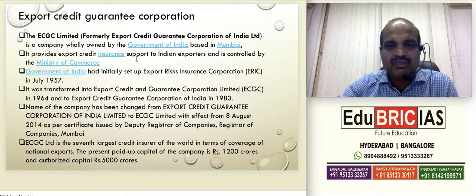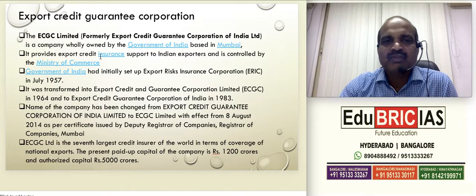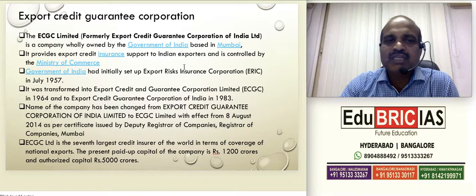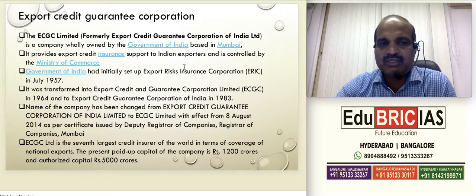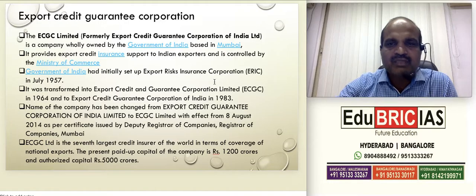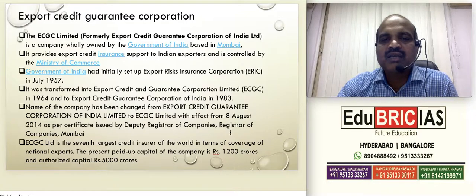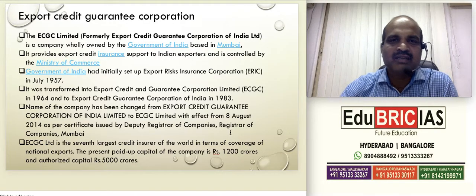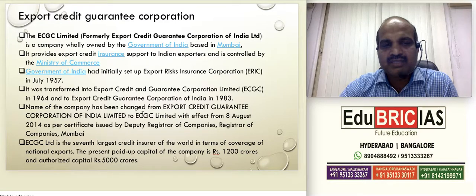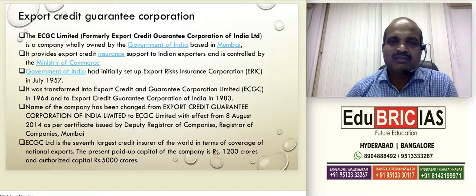Looking at the history of ECGC: ECGC Limited, earlier known as Export Credit Guarantee Corporation of India Limited, has its head office in Mumbai. It provides export credit insurance to exporters and is completely under the control of the Ministry of Commerce, Government of India. Initially it was set up as the Export Risk Insurance Corporation in 1957, then converted into Export Credit Guarantee Corporation Limited in 1964, and finally came to be known as Export Credit Guarantee Corporation of India in 1983. The name was changed again in 2014 to Export Credit Guarantee Corporation of India Limited, giving it the status of a public company.